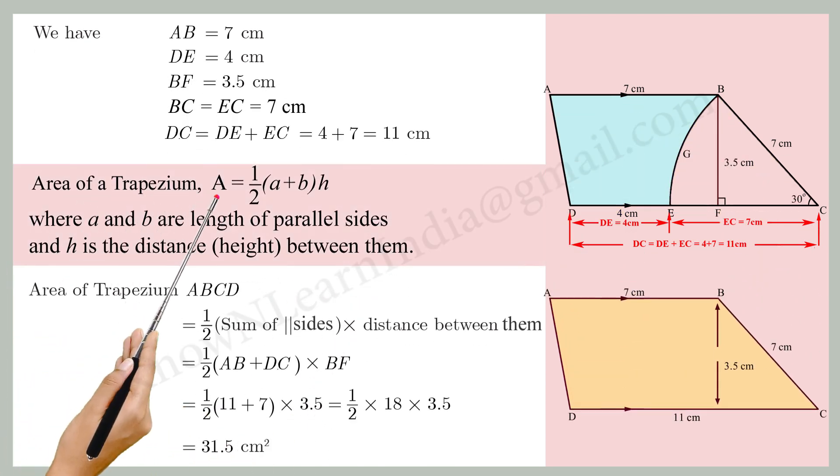Area of a trapezium A equals half times (A plus B) times H, where A and B are the lengths of the parallel sides and H is the distance between them.